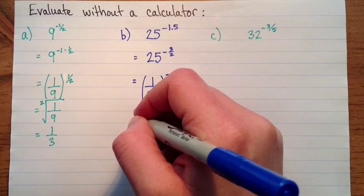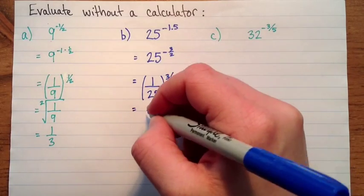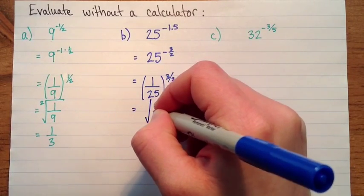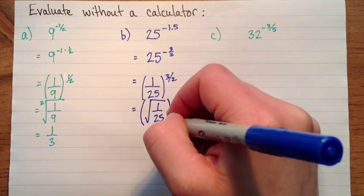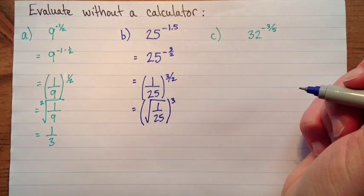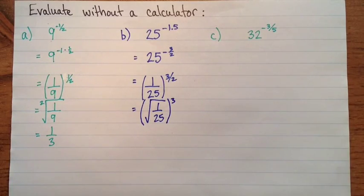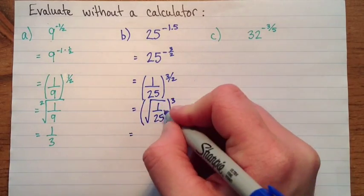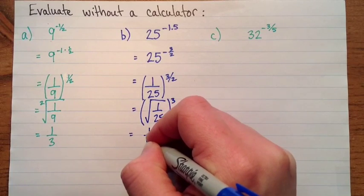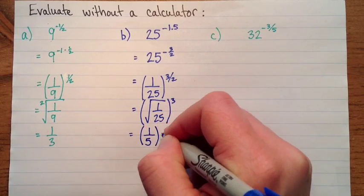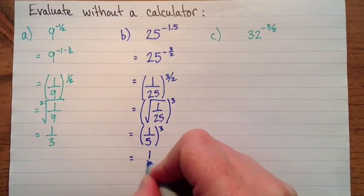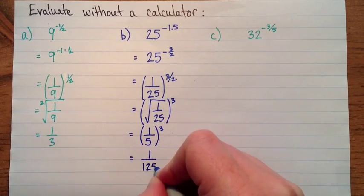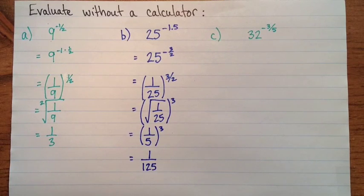And now we'll rewrite that as a radical. So this is the square root of one over 25, all of that cubed. And then the square root of one twenty-fifth is one over five, one-fifth. So that's still cubed, and that is equal to one over one twenty-five.